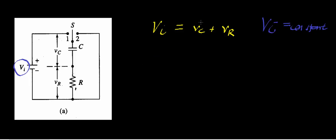These are defined as instantaneous quantities — notice the lowercase v's here. The input voltage always has to equal the instantaneous voltage across the capacitor plus the instantaneous voltage across the resistor, because both are components of the constant input voltage. They always have to sum to equal each other.